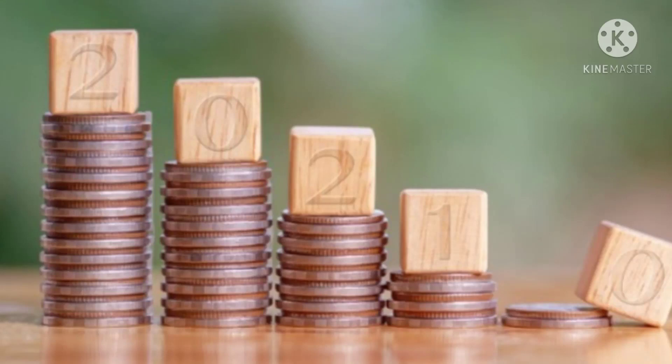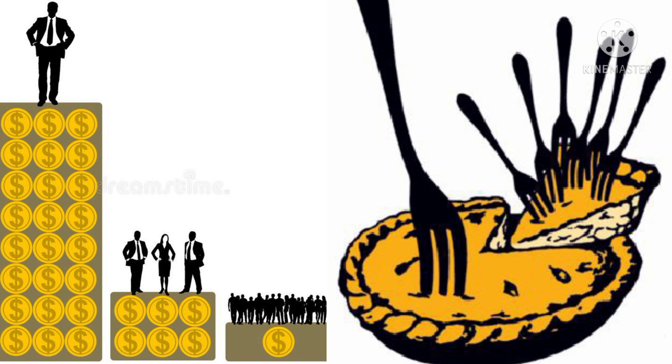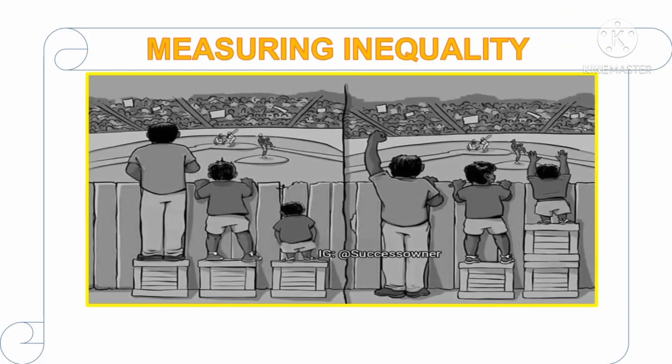Hello everybody. In this video I'll be talking about the two most commonly used measures of inequality: the Lorenz curve and the Gini coefficient. But before that, please take a look at this picture. There are two situations illustrated in this photo: equality and equity. Which one do you think portrays equality or equity?